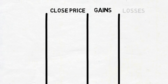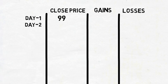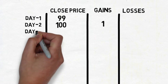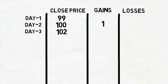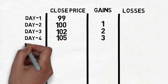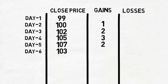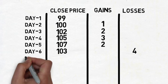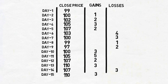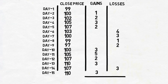For example, let's see the daily closing prices of a script. Day 1: 99. Day 2: 100 — as 1 rupee increased from day 1 to day 2, we write 1 rupee in gains. Day 3: 102 — points gained is 2. Day 4: 105 — points gained is 3. Day 5: 107 — points gained is 2. Day 6: 103 — as 4 points decreased since the previous day, points lost is 4. Day 7: 100 — points lost is 3. Continuing like this for 15 days, total gains is 24 and total loss points is 13.